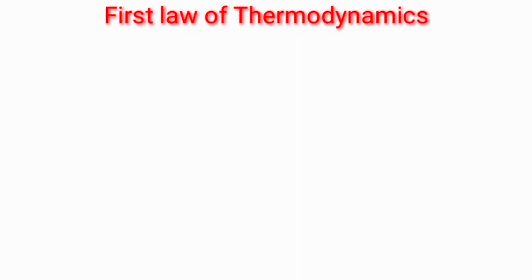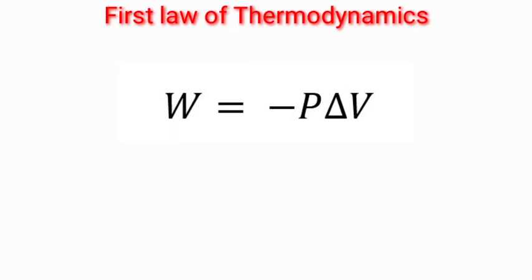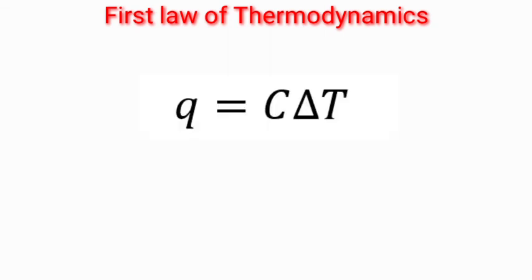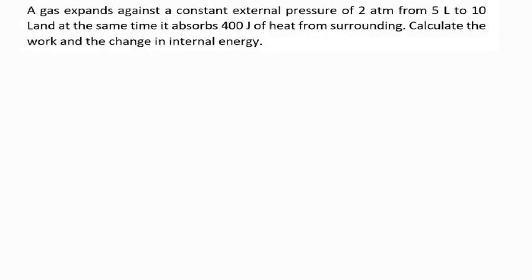The first law of thermodynamics is about calculating work and heat released or absorbed by the system, and the change in internal energy. The equation is delta U equals q plus w, where delta U is the change in internal energy, q is the heat, and w is the work. The equation for work is negative p multiplied by delta V, where p is the pressure and delta V is the change in volume. The equation for heat is c multiplied by delta T, where c is the heat capacity and delta T is the change in temperature.